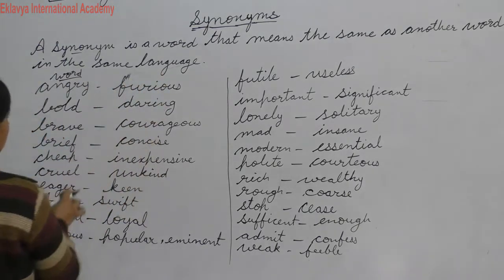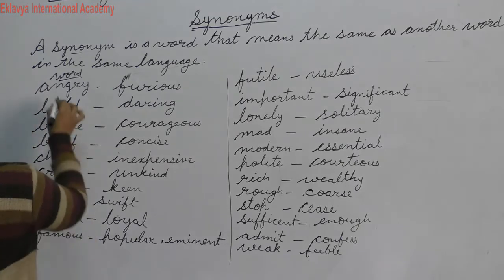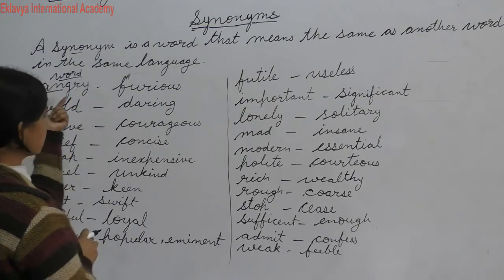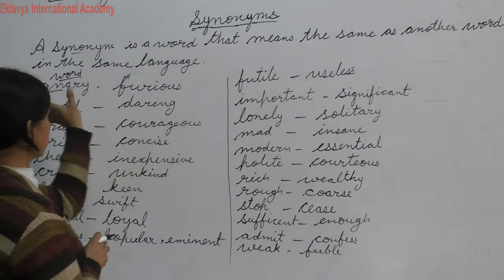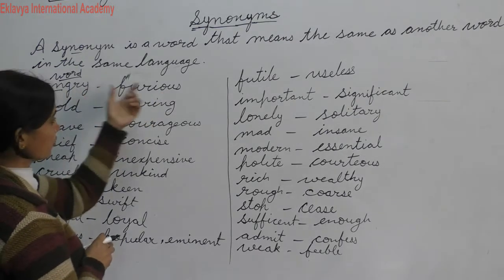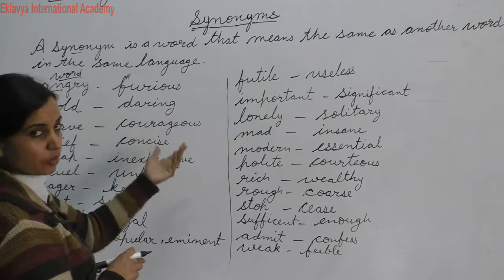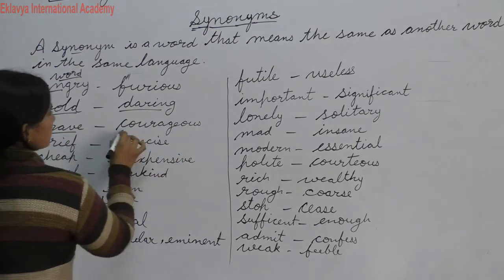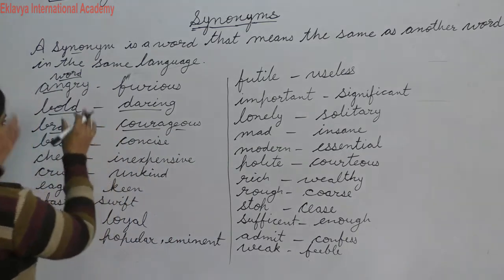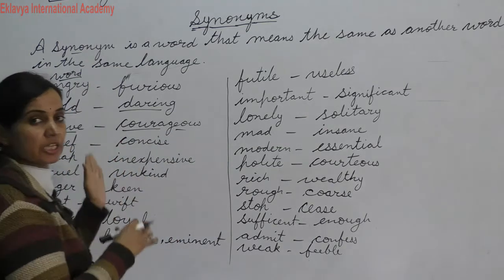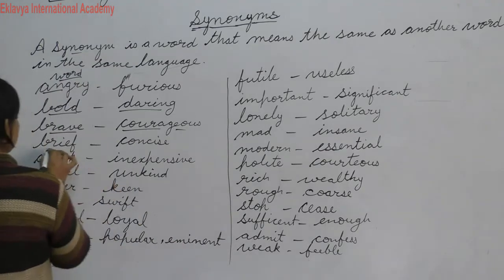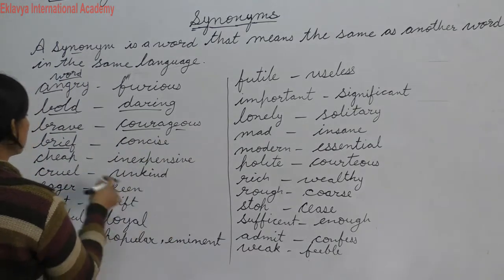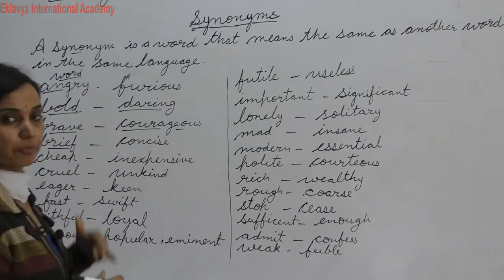Let's see the first ones. Angry — means na-raza. Furious also means na-raza, gusse mein ho. So angry and furious are synonyms. Next: bold, daring, brave, courageous — yeh sare words bilkul same hain, their meanings are the same.